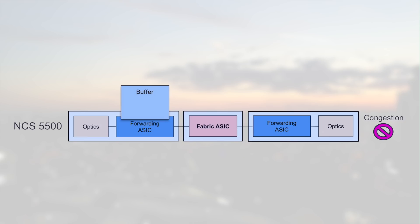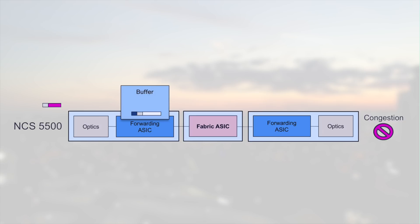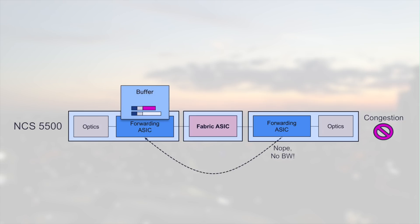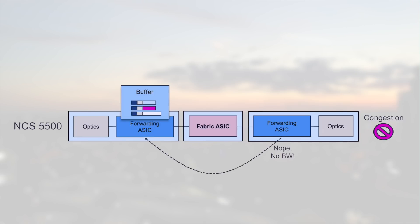Now, let's imagine the destination queue is saturated — note that it could be a port or just a queue, but we'll come back on these concepts later. For each packet received, the ingress scheduler will contact its egress counterpart, and since the permission to transmit is not granted, the packet will pile up in the ingress buffer, building up a queue.